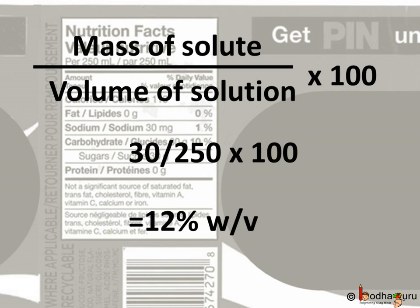Now what is the percentage of sugar? It is 30 divided by 250 multiplied by 100, which is equal to 12 percent. This is mass by volume percentage, which tells us the concentration of sugar in it. 12 percent of sugar is a lot of sugar. This concentration is denoted by W/V.